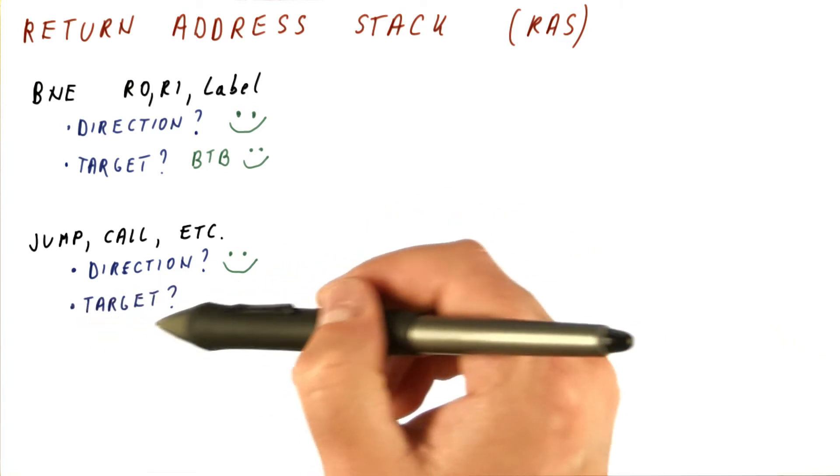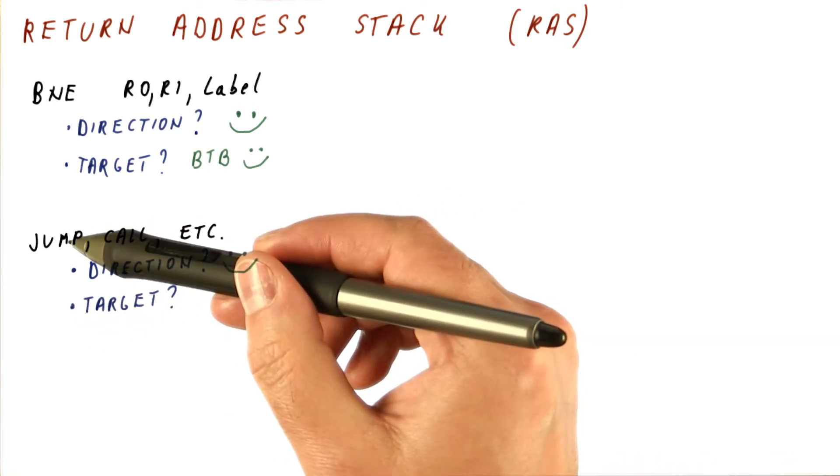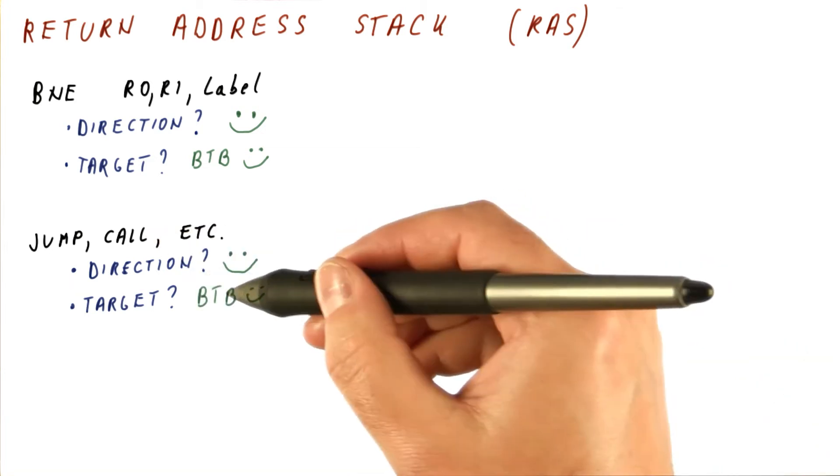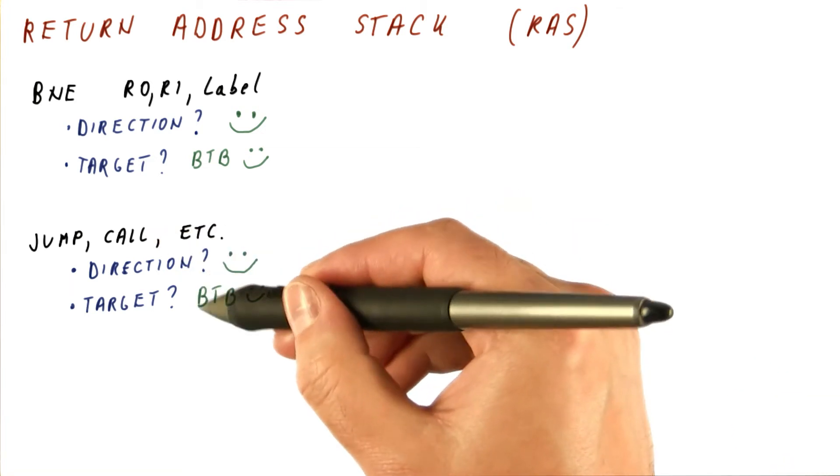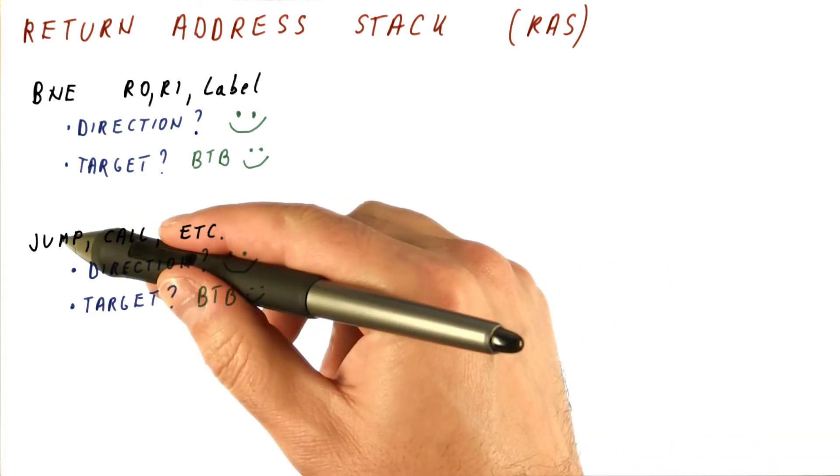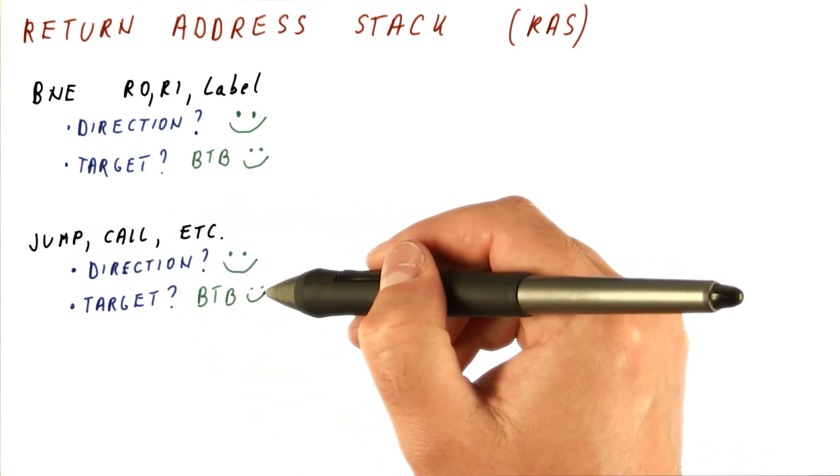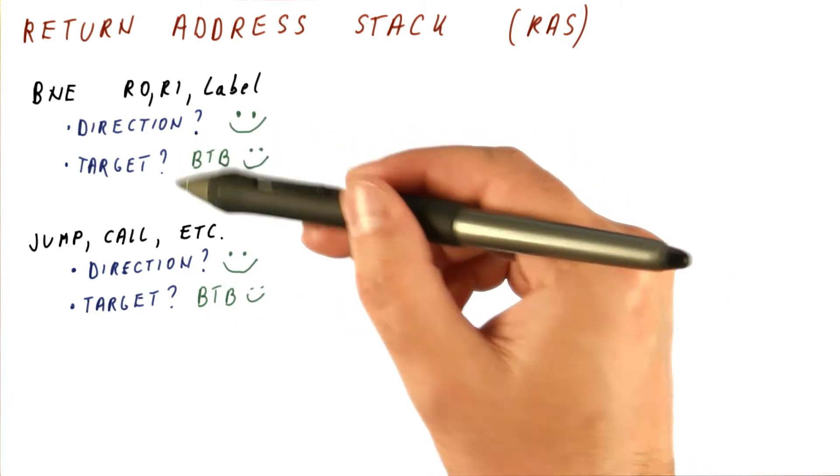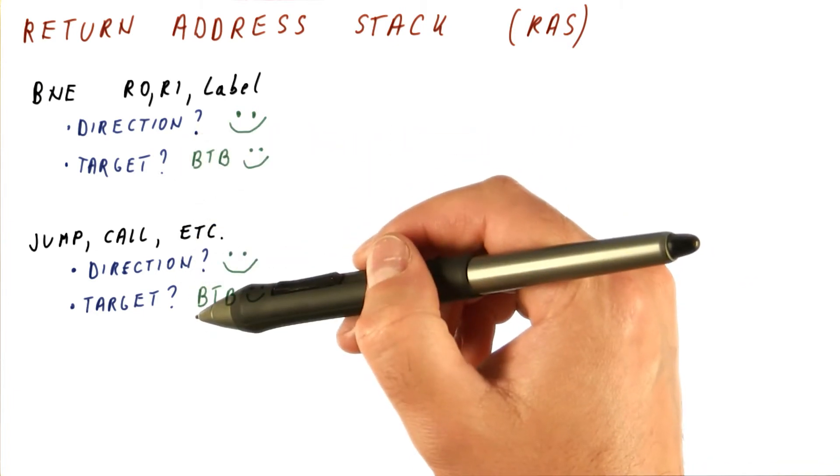As far as the target prediction is concerned, most of these either jump to a label or call a specific function. So a simple BTB that just remembers the previous target when this instruction was executed will do just fine. So it looks like we have handled both the direction and the target for most of the common branch types.